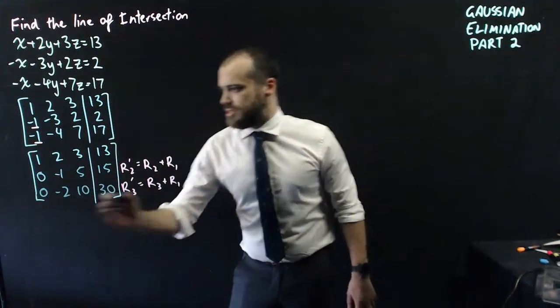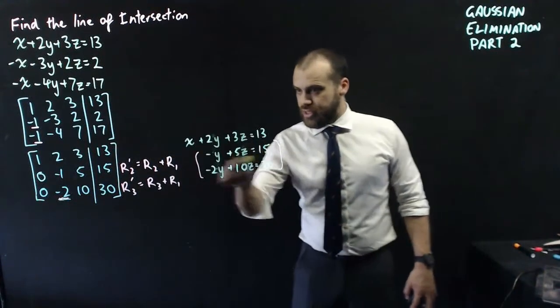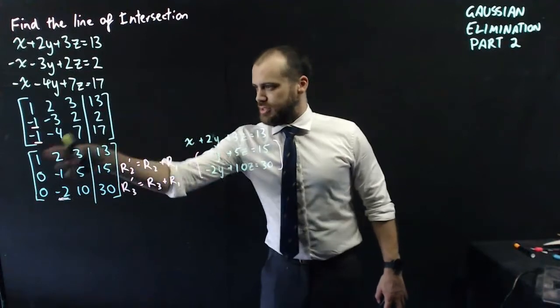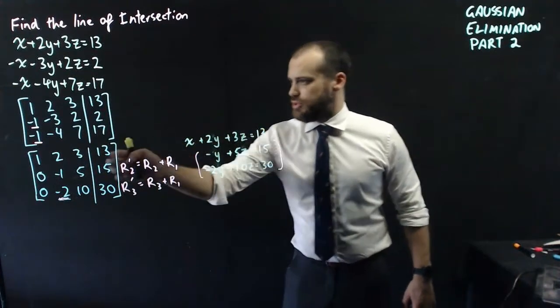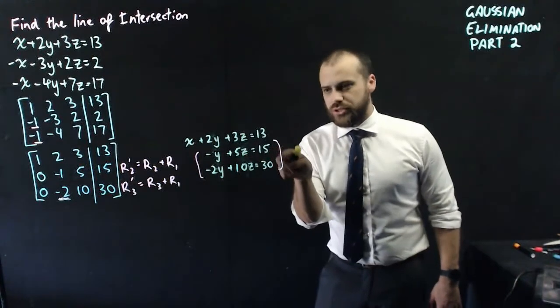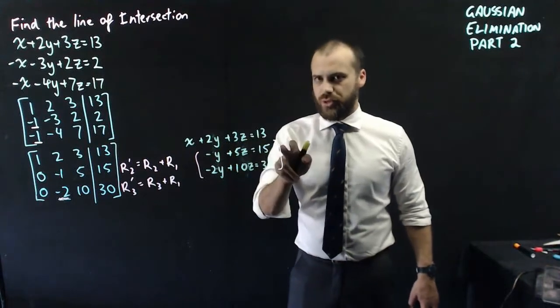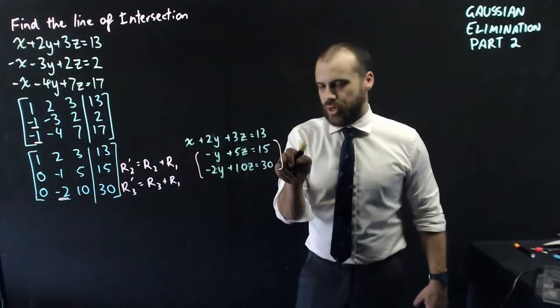Alright, my next step here is to get rid of this negative two. But before I do, look at these things. This is that equation, x plus two y plus three z equals thirteen. And then these are these two equations. Look at equation two and three though. They're the same. If I multiply this equation all through by two, I get that equation. Now that's going to have some interesting ramifications when I get rid of that negative two.